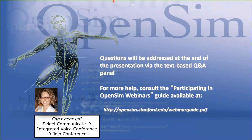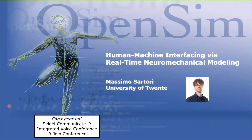Massimo Sartori is an assistant professor at the University of Twente, where he directs the Neuromechanical Modeling and Engineering Lab. His research focuses on interfacing robotic technologies with the neuromuscular system for enhancing human movement. Massimo is a very active member of the OpenSim community — he was a participant in our NCSRR Visiting Scholars Program, he's an OpenSim fellow, and he's helped run several workshops and tutorials. We're really excited to have him present today.